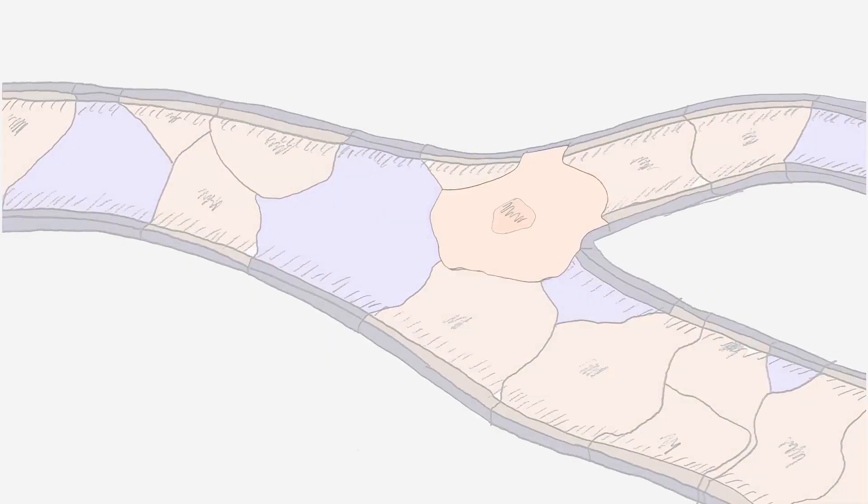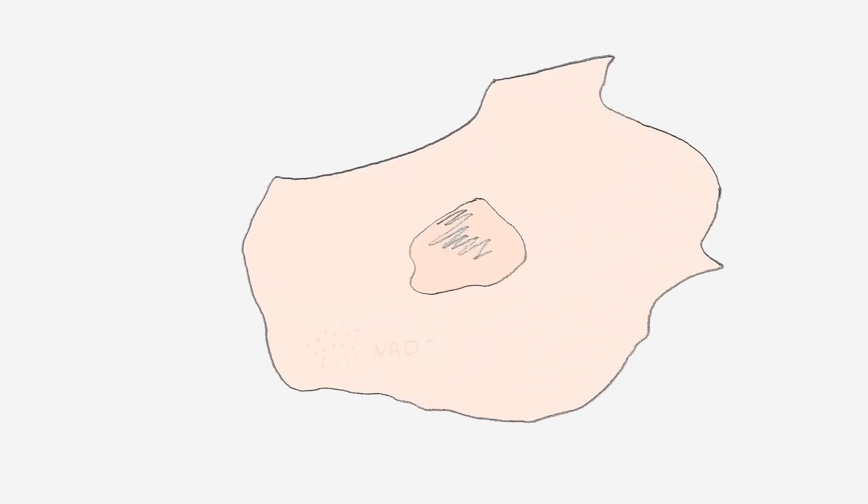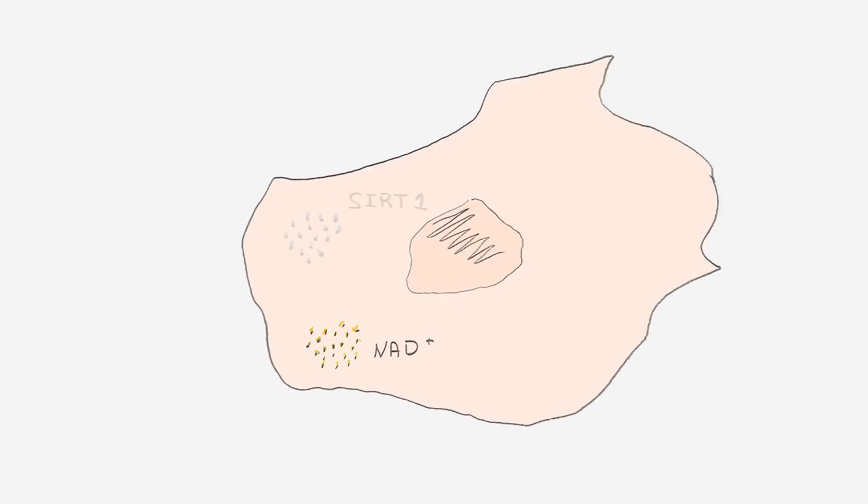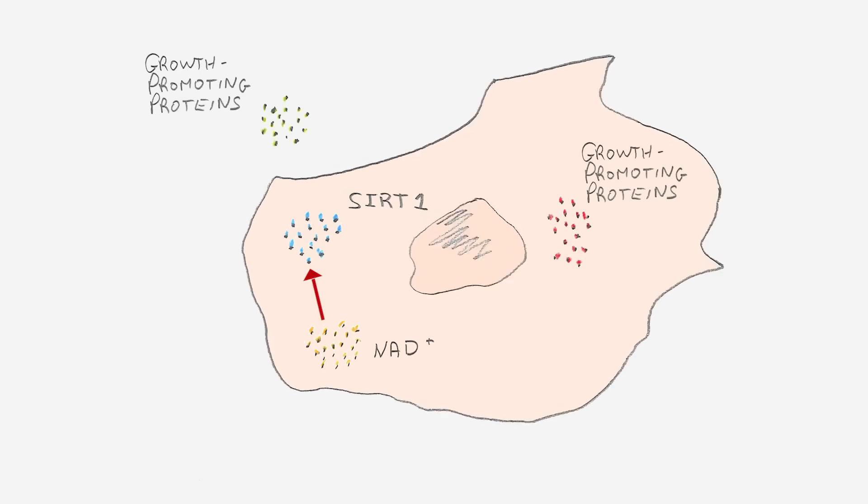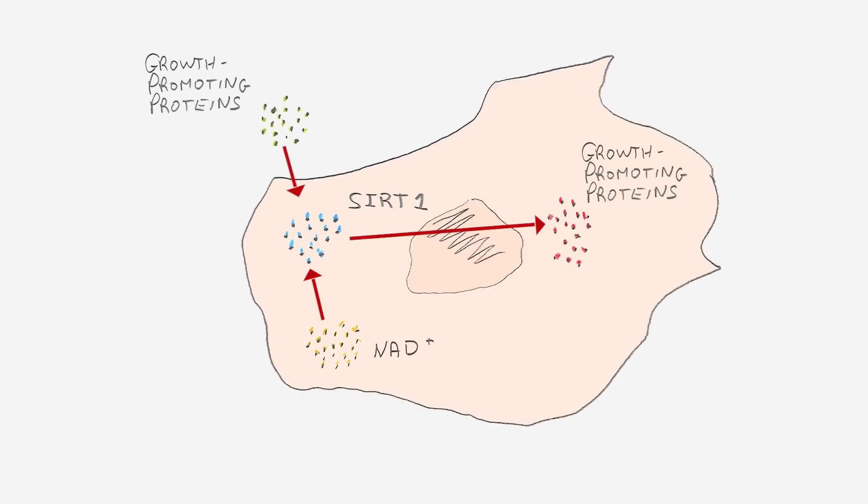The two key players in the crosstalk between blood vessels and muscles are a molecule called NAD and a protein called SIRT1. NAD boosts SIRT1, which in turn enables the conversation between muscles and blood vessels.